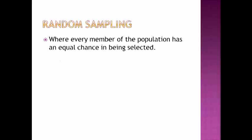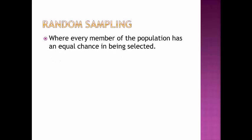We'll begin with random sampling. Random sampling is where every member of the population has an equal chance in being selected. An example of this would be picking names out of a hat where everyone has an equal chance. As a result, the plus is that there's no bias.